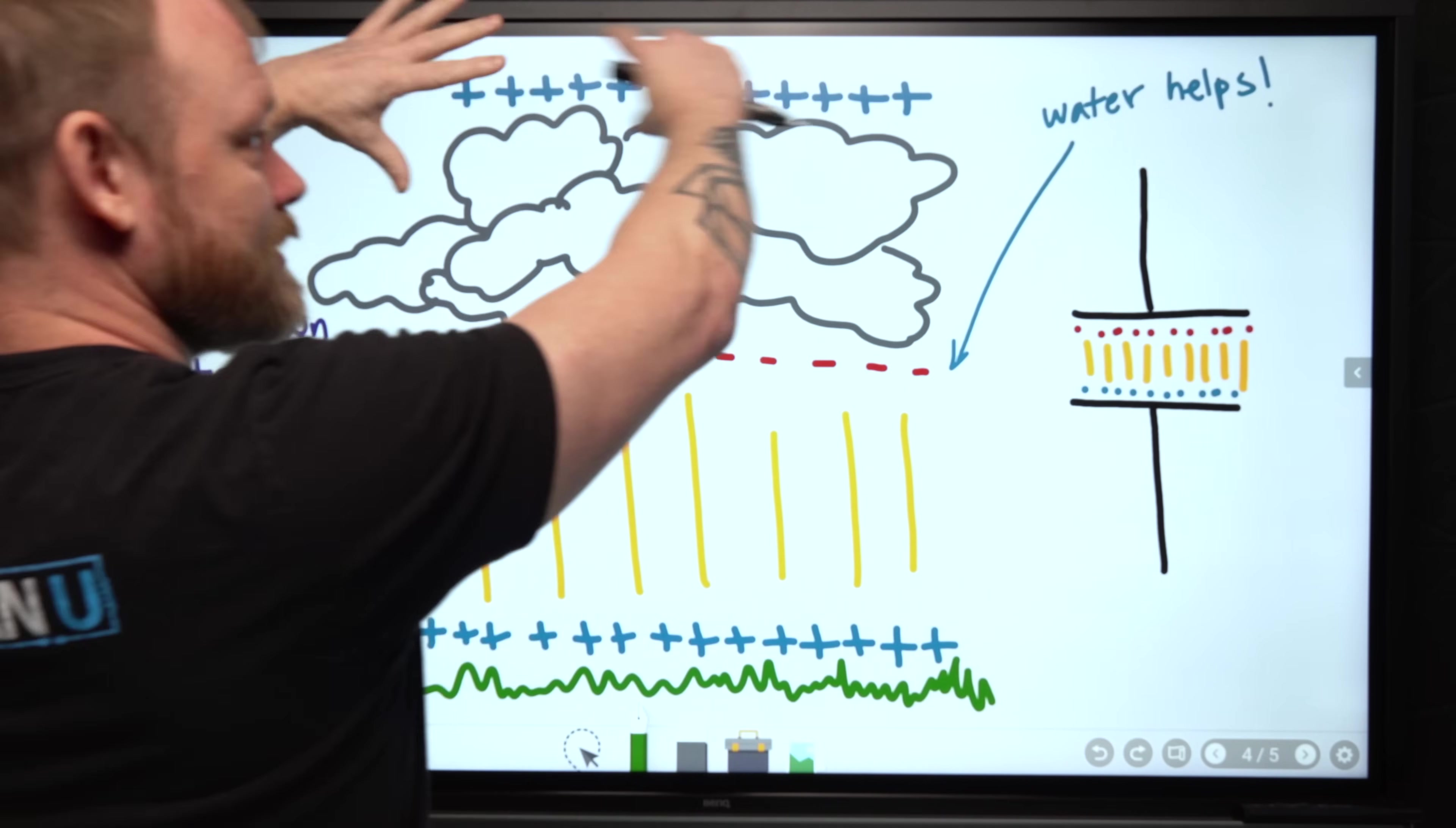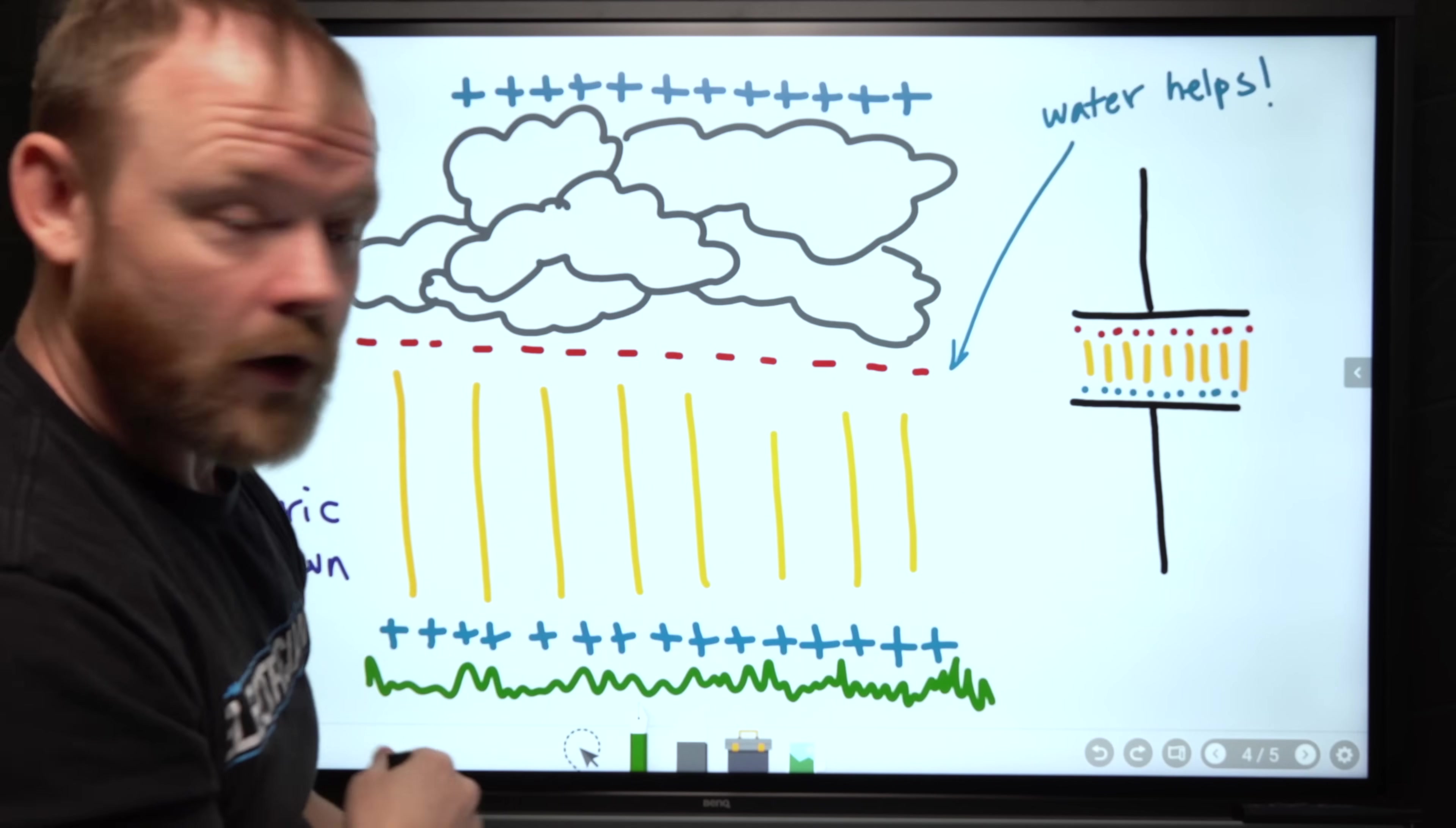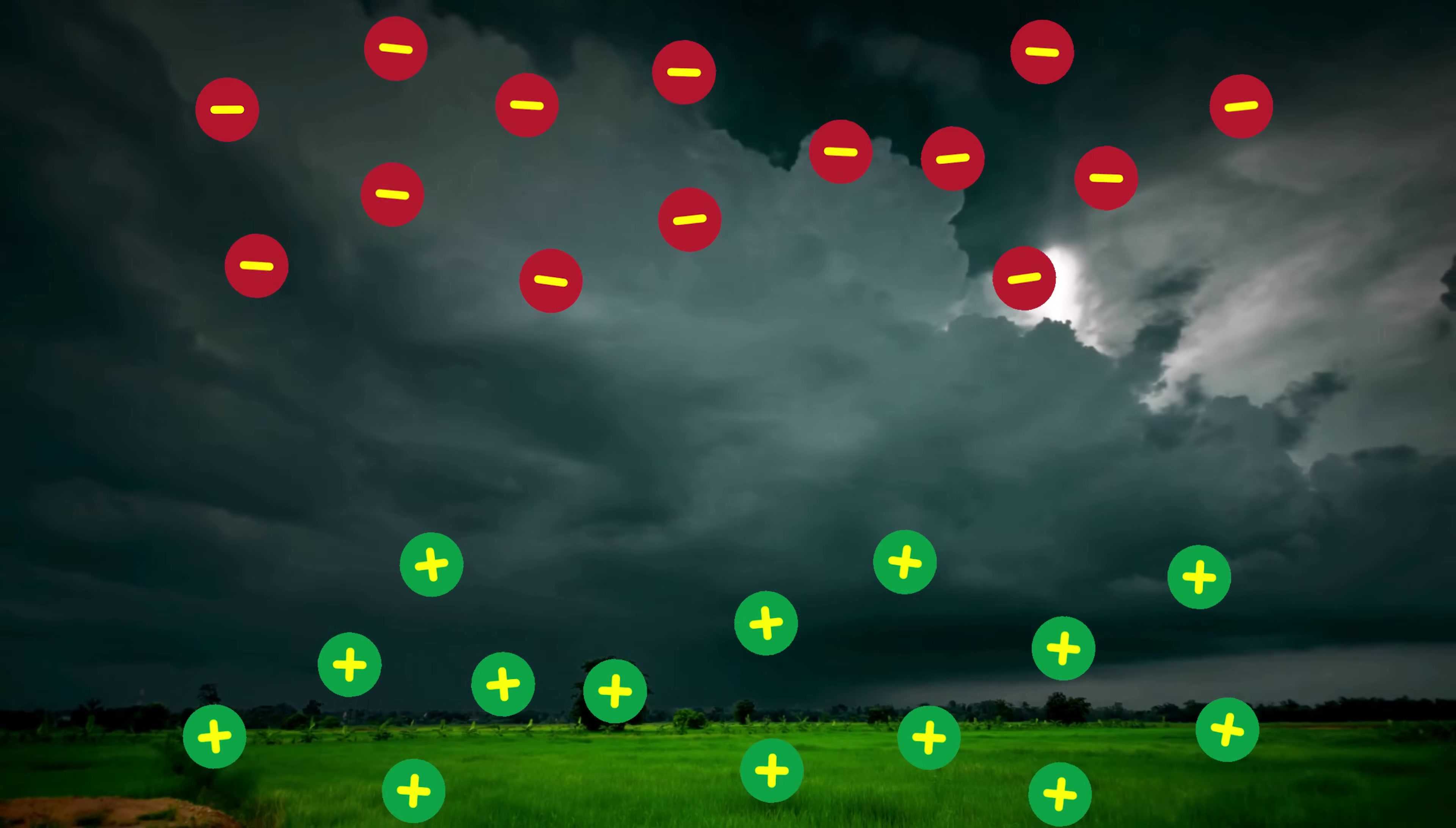So a whole bunch of positive charge builds up kind of in the upper part of the cloud, a whole bunch of negative charge builds up on the bottom of the cloud, and now we have this huge difference of potential between the cloud and earth. So what happens is when this voltage, when this difference of potential gets to a certain point—what we call a breakdown voltage—it will allow a discharge all the way through it to get to the ground.